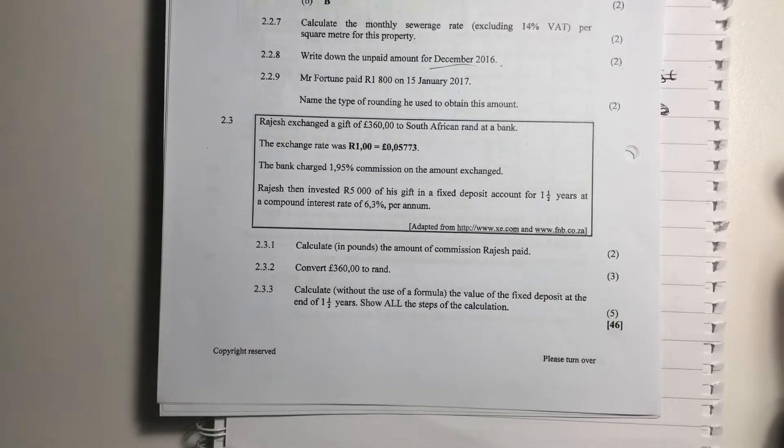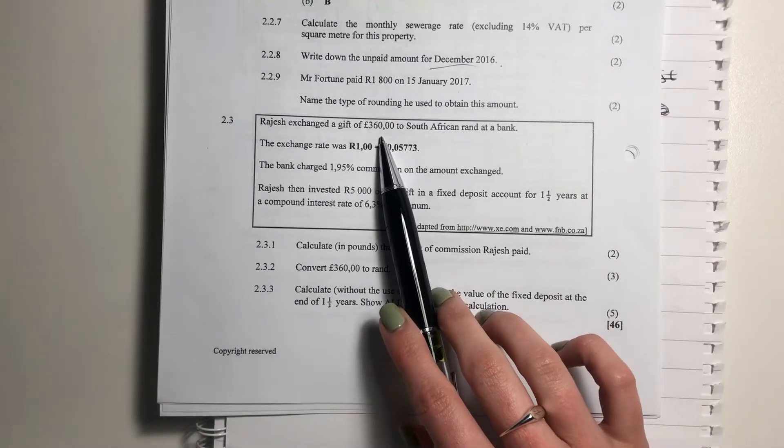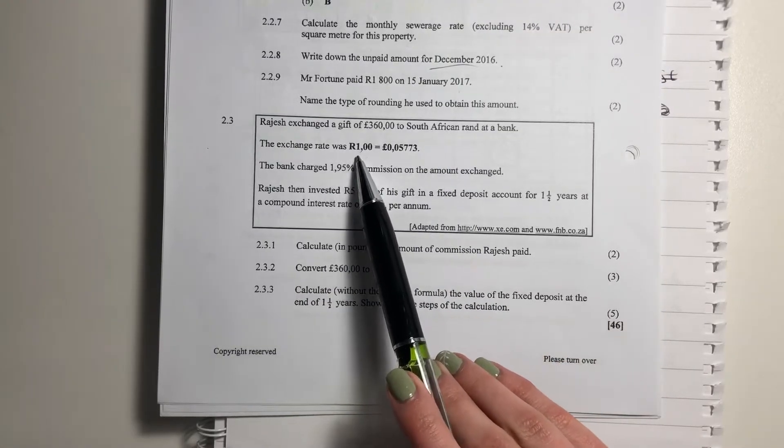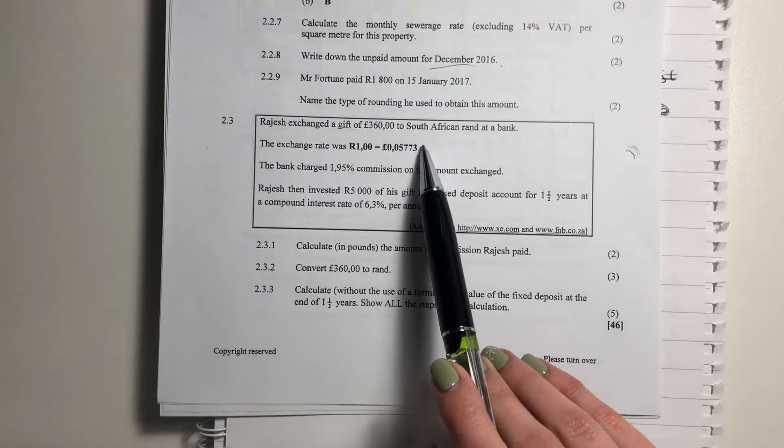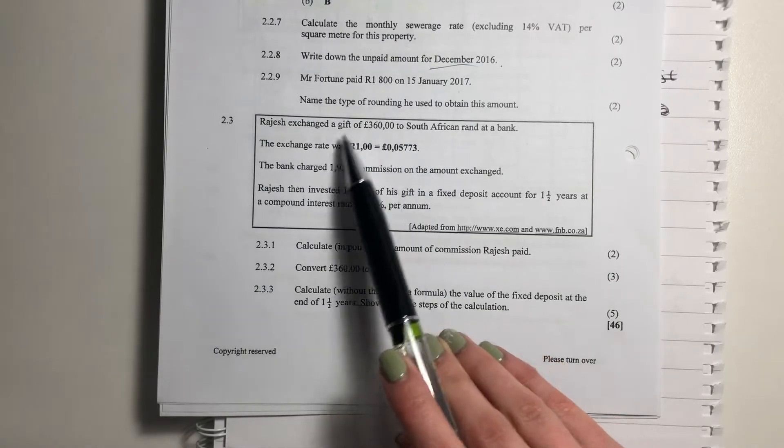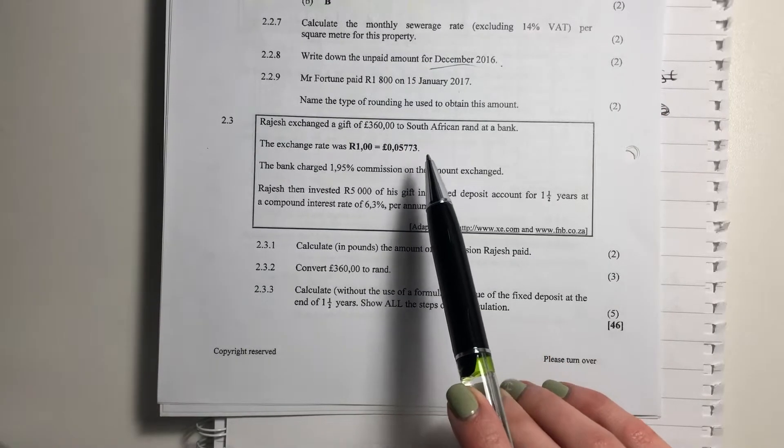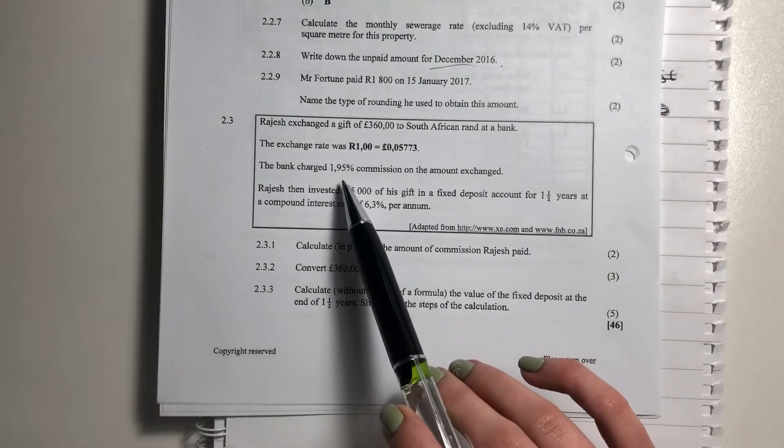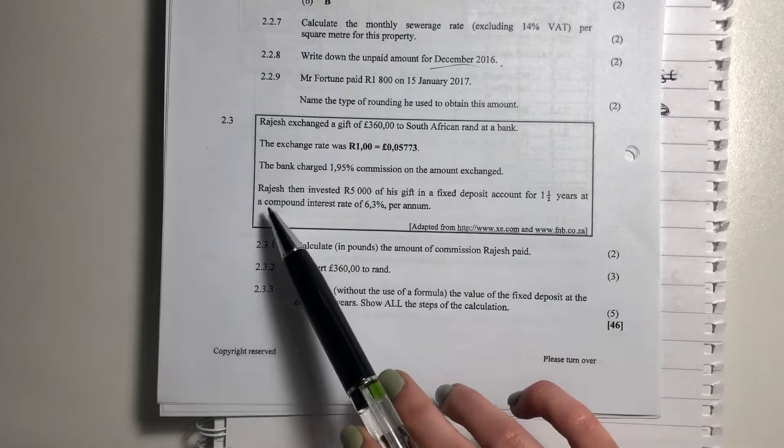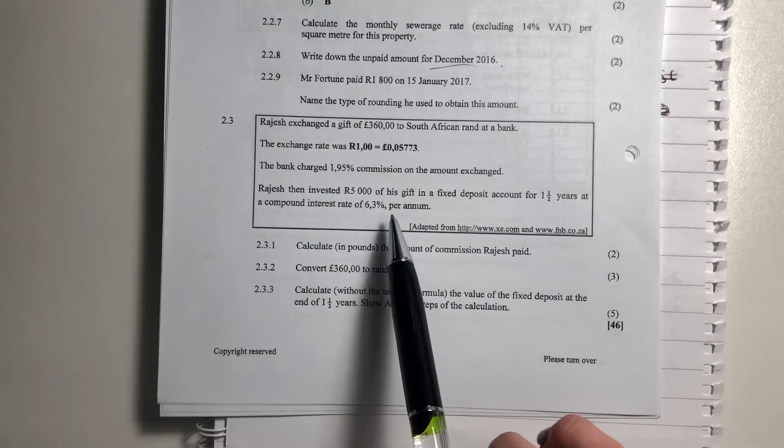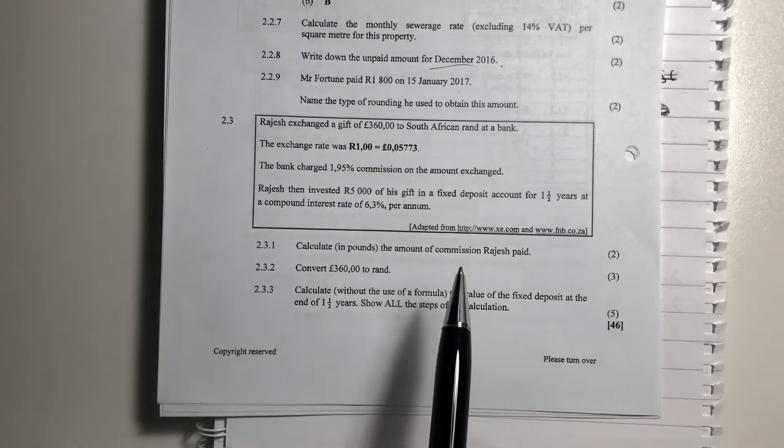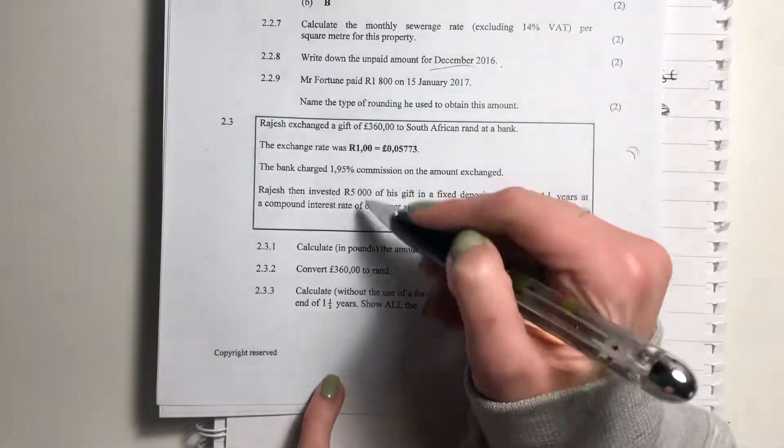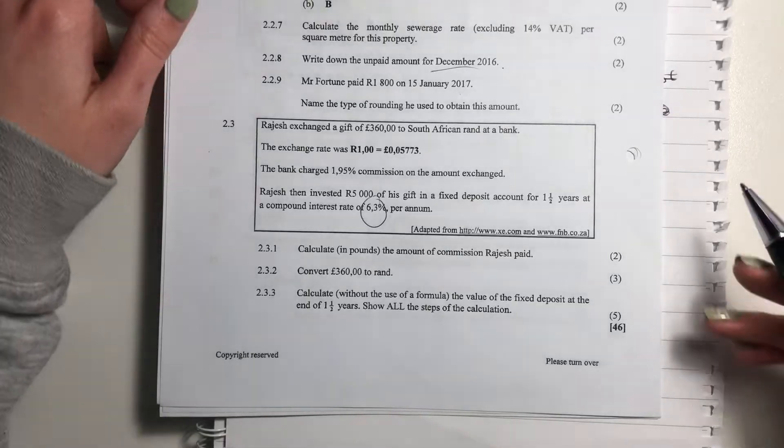It says Rajesh exchanged a gift of £360 to South African rand at a bank. The exchange rate was £1 rand equals 0.05773. This is what we call an indirect exchange rate, not that that's important, but just so that you know. The bank charged £1.95 commission on the amount exchanged. Rajesh then invested £5,000 of his gift in a fixed deposit account for one and a half years at a compound interest rate of 6.3% per annum.